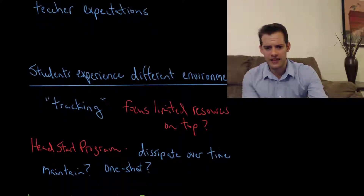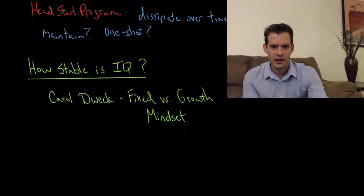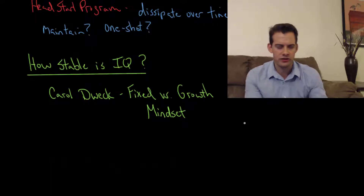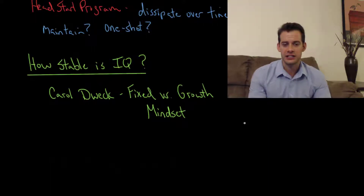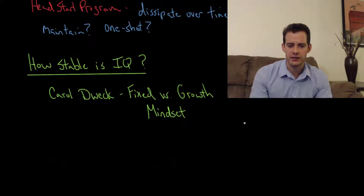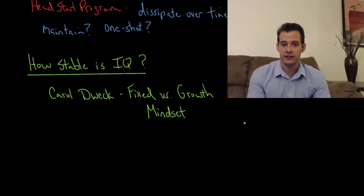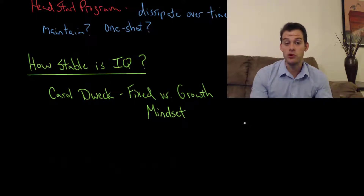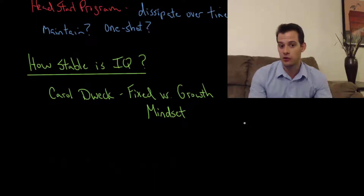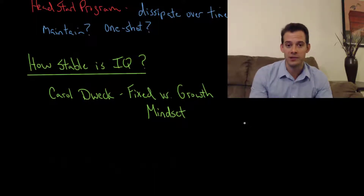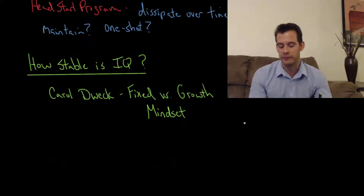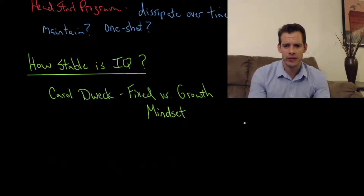This brings us to the question of how stable IQ is. All students in Rosenthal and Jacobson's study made improvements over the course of the year, which raises questions about what was really being measured — IQ versus achievement. Parts of the test included vocabulary, which you can always expand, but does that mean IQ is improving? This goes back to the problem of how we define IQ and whether long-term improvements are possible.